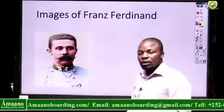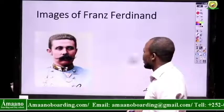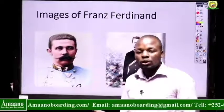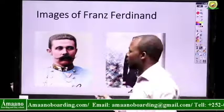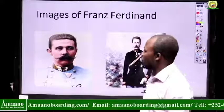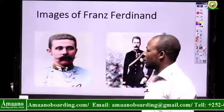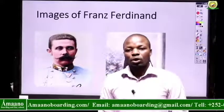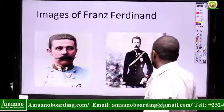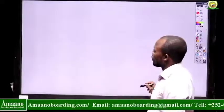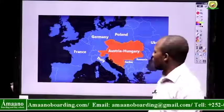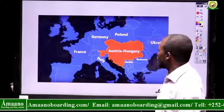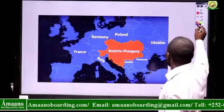Here is the Archduke Franz Ferdinand, who was assassinated. He was allegedly killed by Serbia, though we do not know for certain whether it is true. Austria blamed Serbia. This is Franz Ferdinand — he was to become the next king. When he was assassinated, Austria declared war on Serbia. Here is a map of part of Europe showing where Austria-Hungary is located.